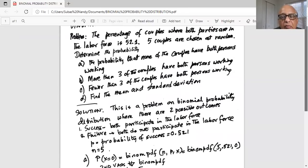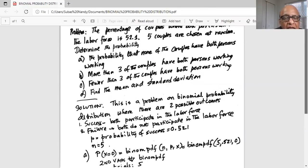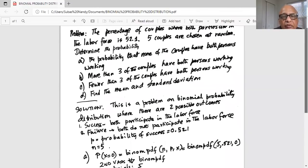Solution: This is a problem on binomial probability distribution where there are two possible outcomes. Success is where both parties in the couple participate in the labor force, and failure when both do not participate. The probability of success, small p, is 52.1% or 0.521 in decimal. The sample size n equals five.